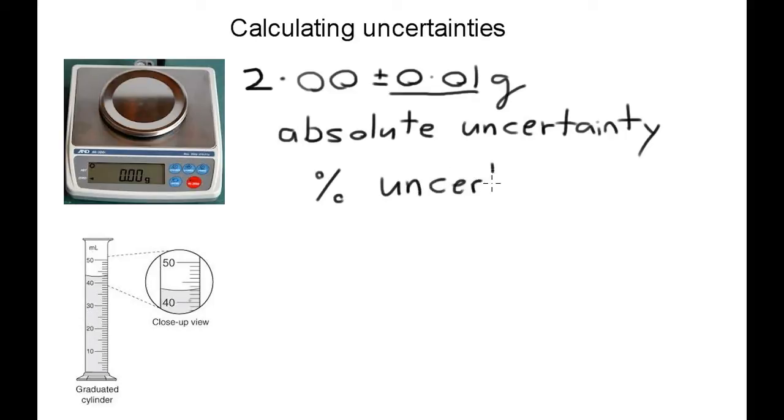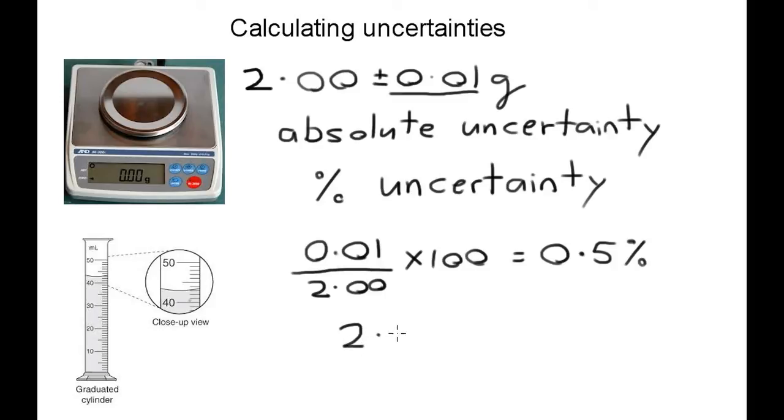It's relatively simple to change to percentage uncertainty. You just take the absolute uncertainty, which in this case is 0.01, and divide that by the measurement. So in this example, it was 2.00 grams, and you multiply that by 100 to get percent, and that should give you 0.5%. So for your final value, you'd write 2.00 grams plus or minus 0.5%.